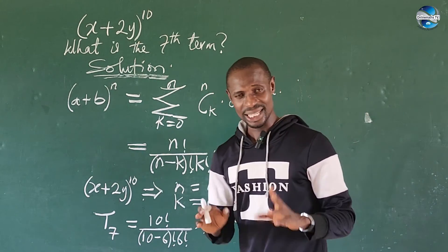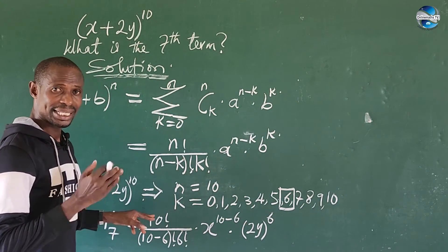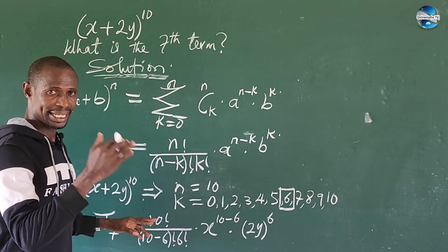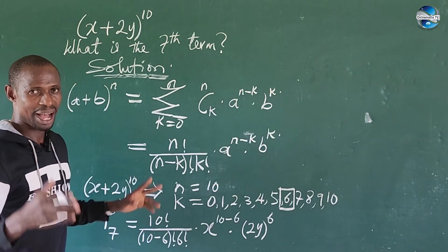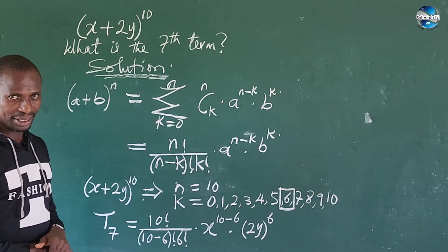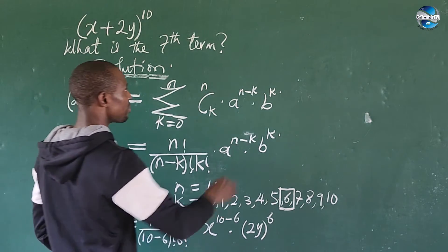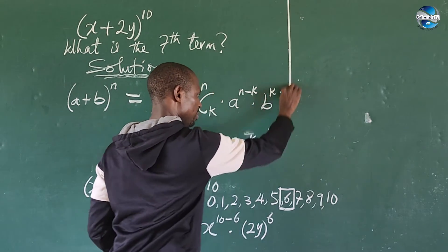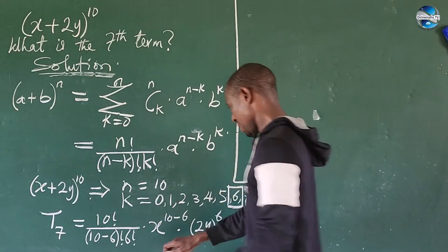So we know that factorial is, for instance, if you have 10 factorial, this is 10 times 9 times 8 times 7 times 6 down, down, down to where you have 1. So if we are to expand this now, what will this give us? So let's continue on this side of the board. From here, let's go ahead.